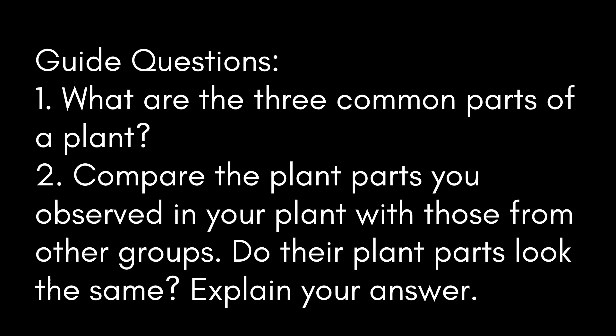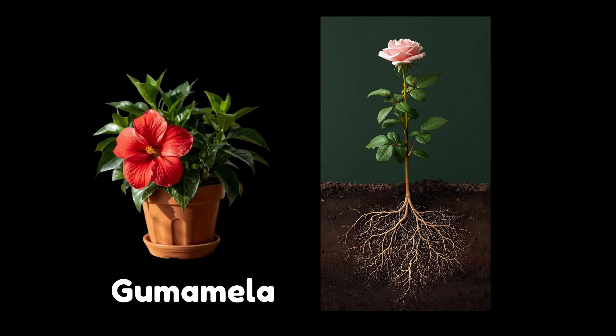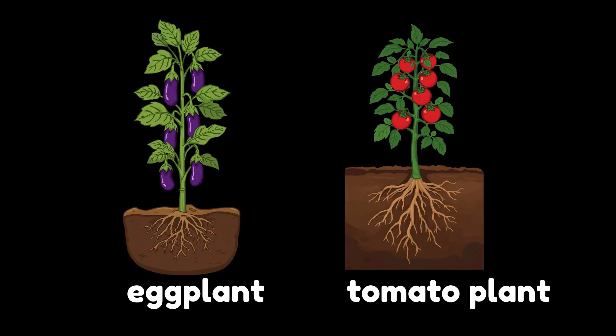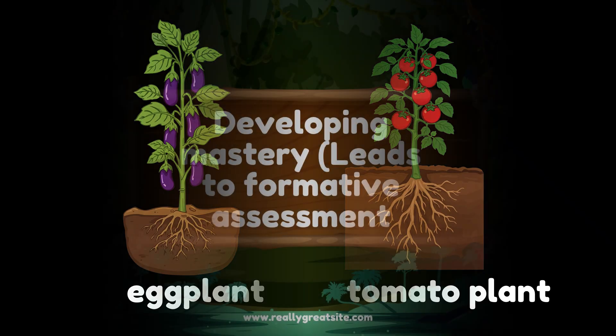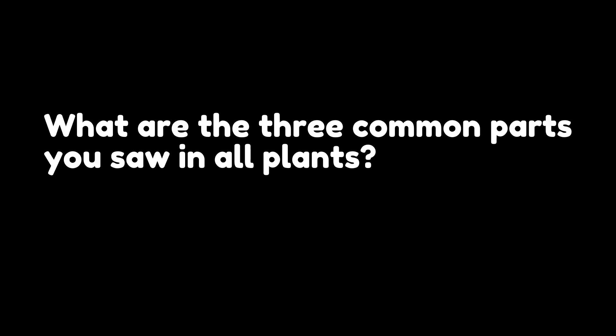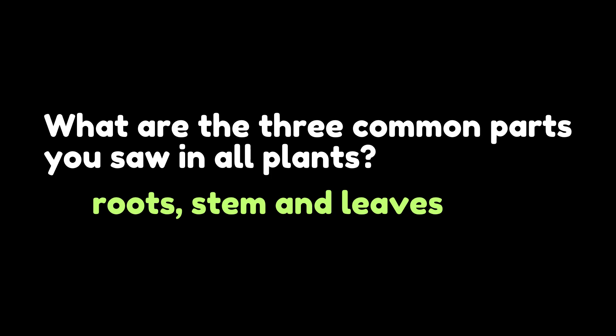These are the guide questions. For number 1, what are the 3 common parts of a plant? Number 2, compare the plant parts you observed in your plant with those from other groups — do their plant parts look the same? Explain your answer. Examples of plants include eggplant and tomato plant. What are the 3 common parts you saw in all plants? We have roots, stem, and leaves.